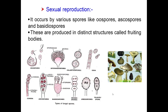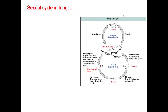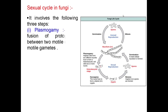Ascospores, basidiospores and these are the fruiting bodies. Now, the sexual cycle in fungi involves the following three steps. First step is plasmogamy — it is fusion of protoplasms between two motile or non-motile gametes. You can look at the diagram here; this is plasmogamy.